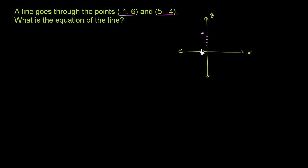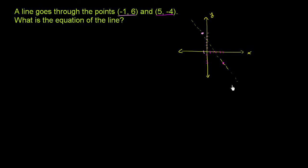And the other point is 5 comma negative 4. So we go over to x equals 5, and then we go down 4. So it's right over there. And the line that connects them will look something like this — I'll draw a dotted line. So the line will look something like that.